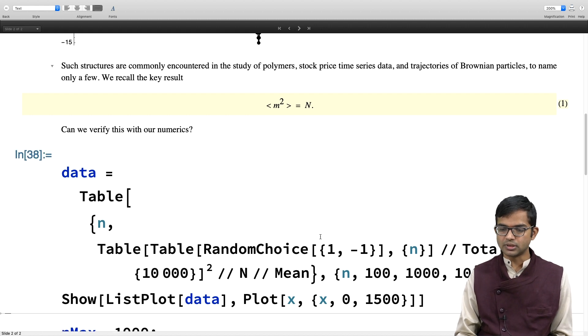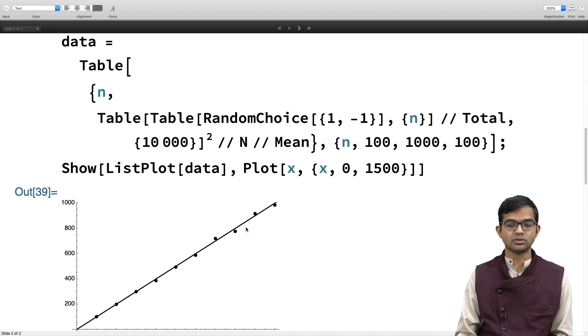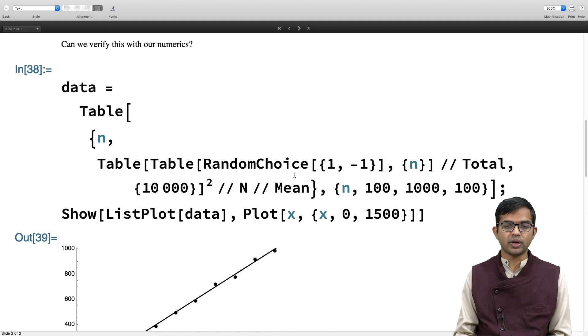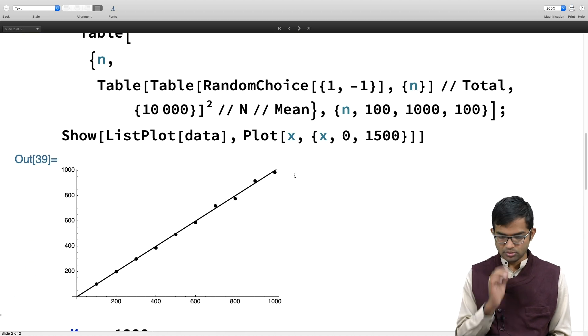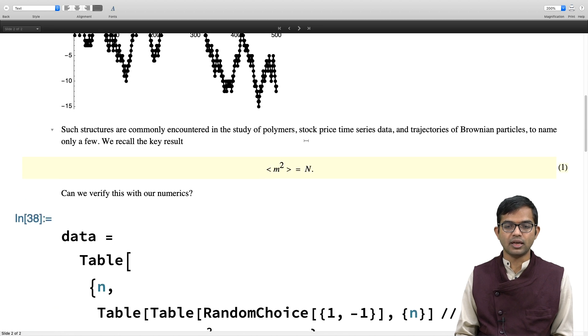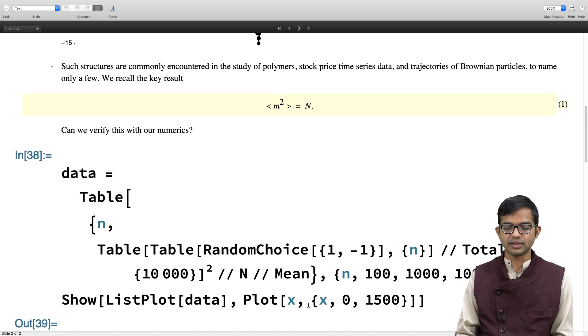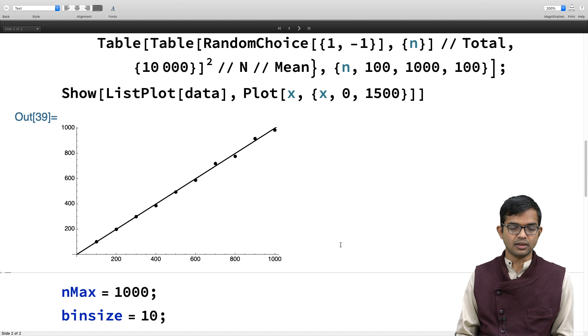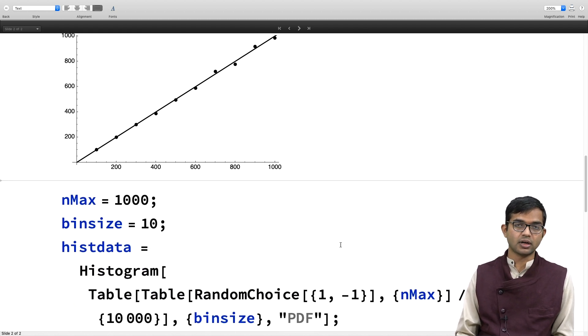It's going to take a minute because this is a large run using 10,000 samples. There you go, I have a perfect straight line. I'm plotting average of m squared, and it goes linearly with n. It's not just linear but has the correct slope as well. I've plotted this function x from 0 to 1500, and it agrees excellently with the analytical result.